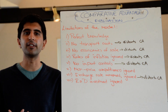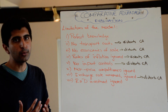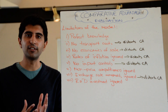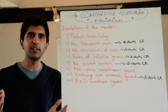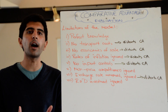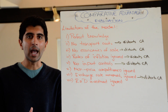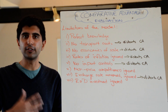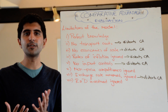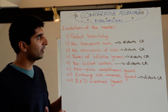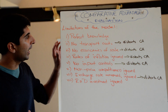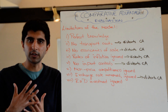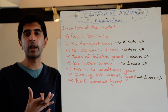Everyone buys from the country that has the advantage, but in the real world there are lots of limitations to this theory. This explains why lots of different countries will produce the same kinds of goods and services, and why a country that you might think has a comparative advantage may actually struggle to sell its goods and services abroad, despite what the theory says. So what are the limitations to the model that hold the theory back from explaining real world trade phenomena?